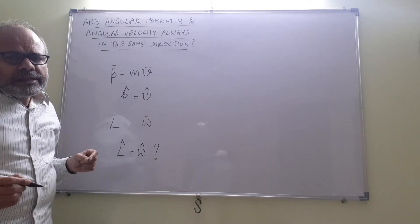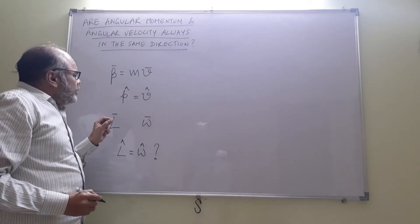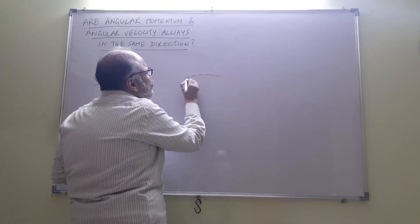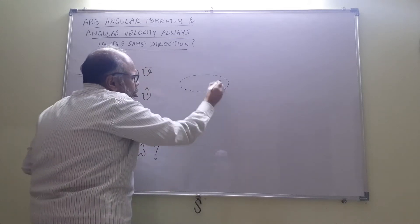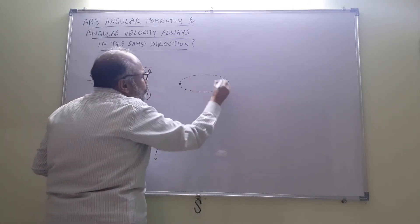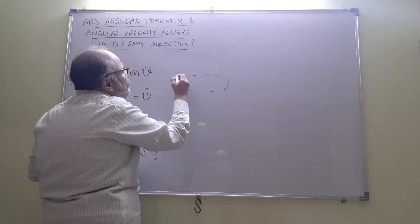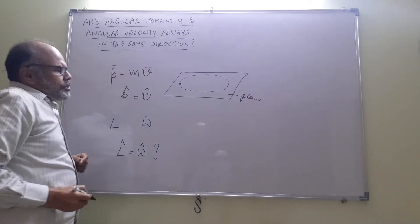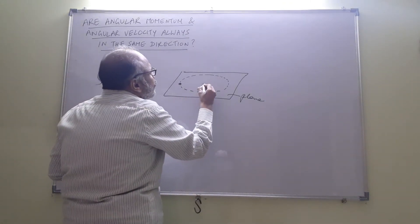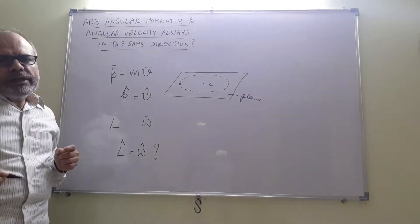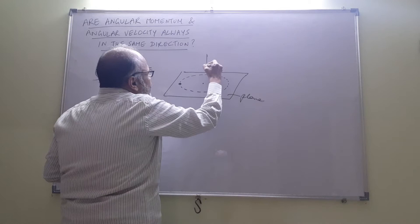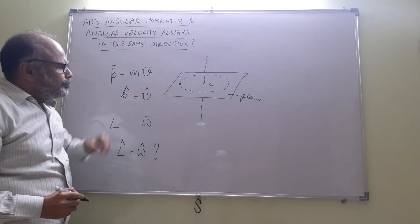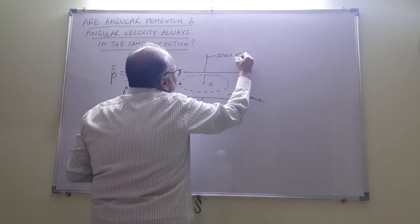To understand that, first let us study the basic definition of omega and L. Let us consider circular motion. There is a particle executing circular motion; the path of the particle will lie in a plane. For this circular motion there would be a center C, and we define the axis of rotation as a line passing through the center and perpendicular to the plane of motion.